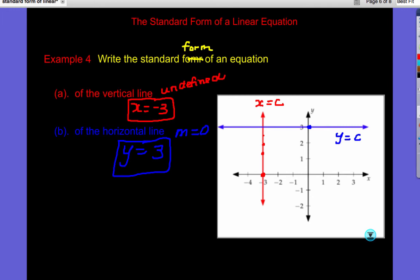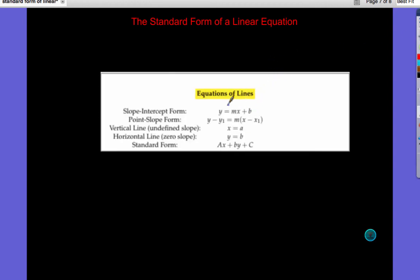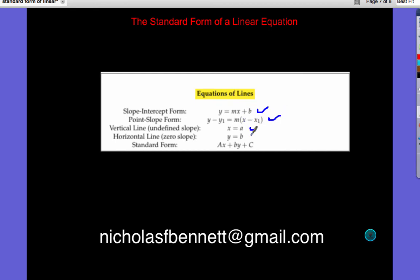So let's look at our roundup, our summary here of all these equations. So slope-intercept form, Y equals MX plus B. We've also talked about point-slope form, Y minus Y sub 1 equals M times the quantity X minus X1. Here's our vertical and horizontal lines. And there's standard form. So if you guys have any questions or comments, let me know. I'll put my email address below, and we'll see you next time.